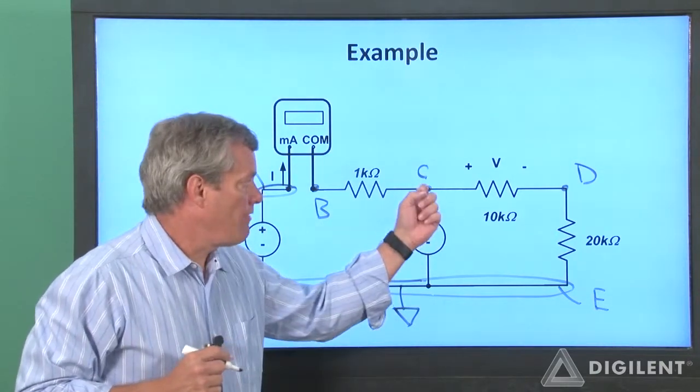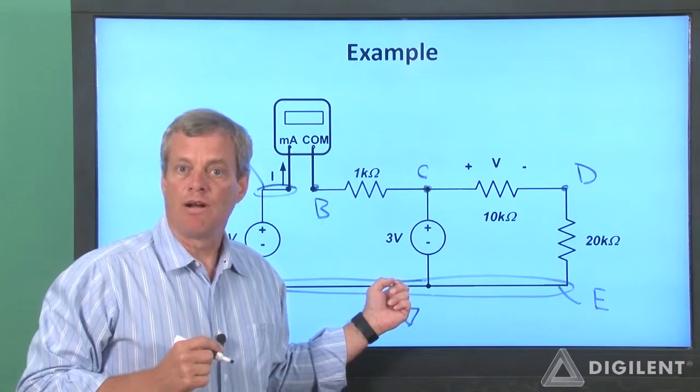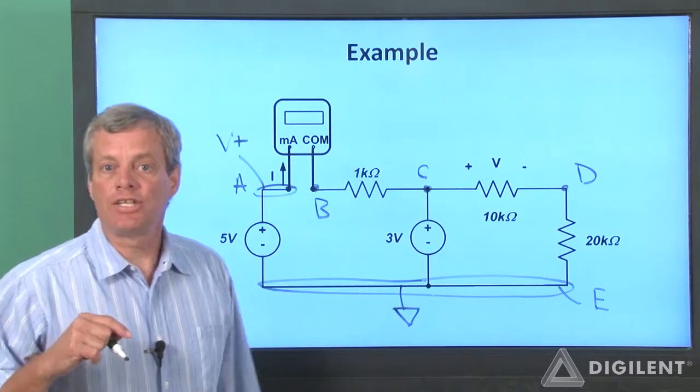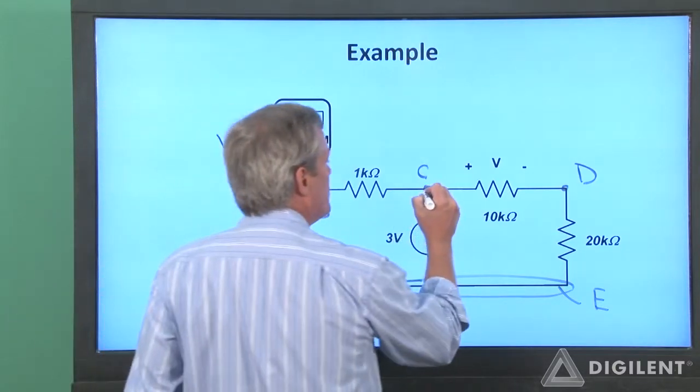At node C, we have positive 3 volts relative to ground. I can only implement a 3 volt source using the waveform generator, so I'll connect channel 1 of the AWG to node C.